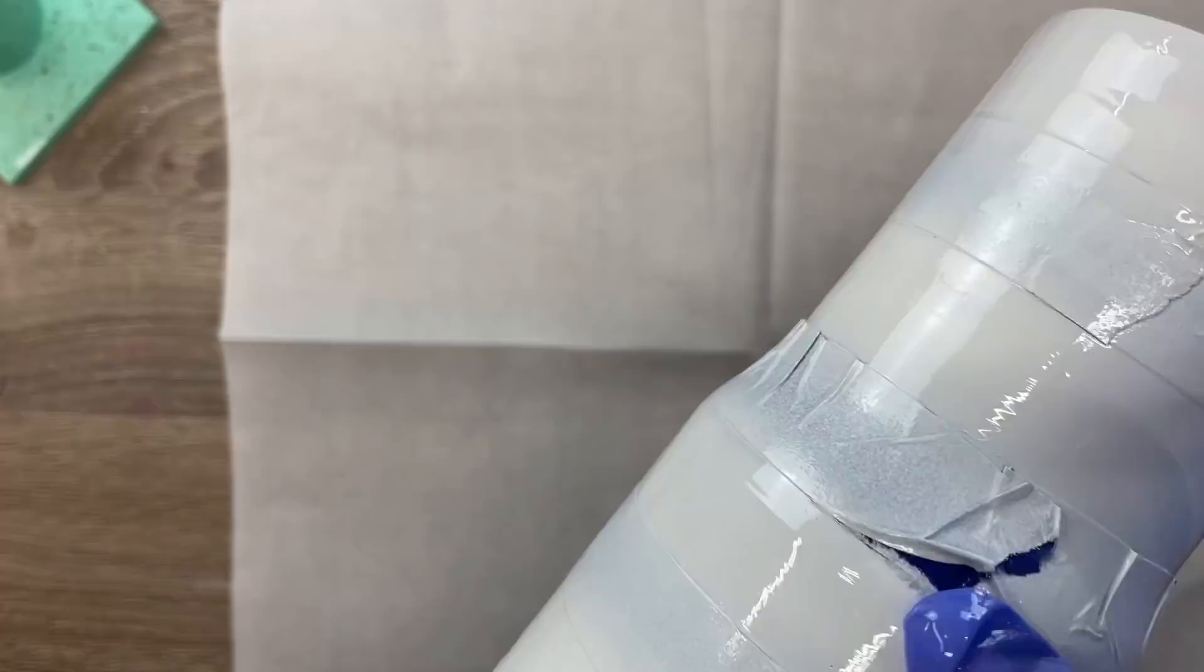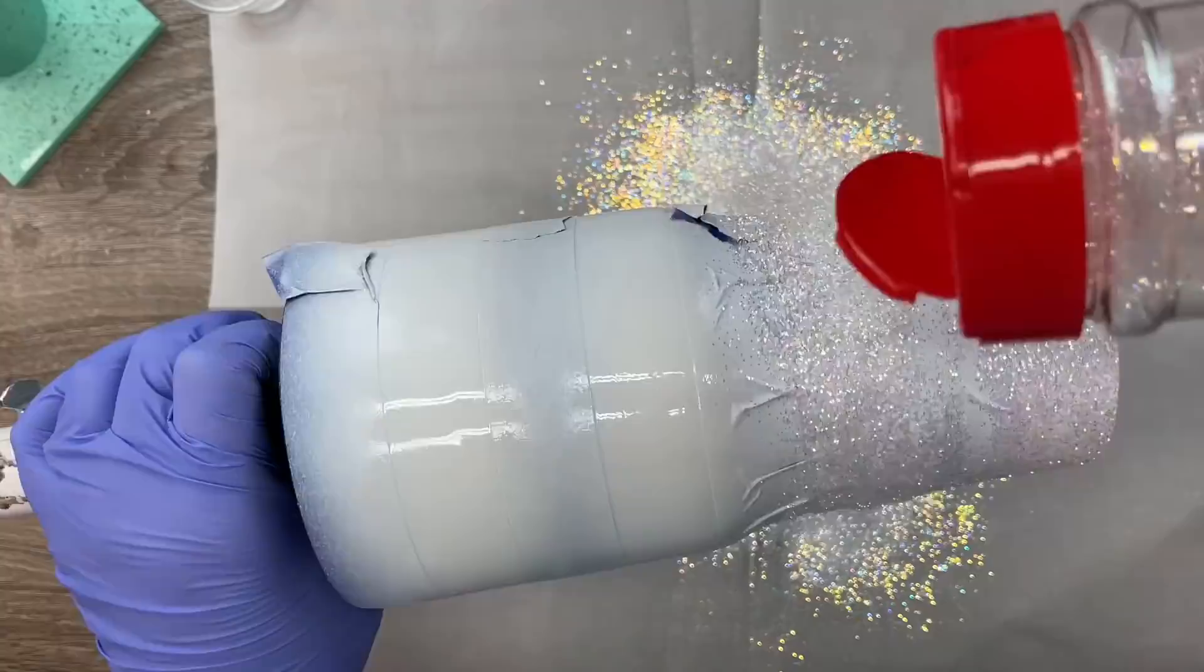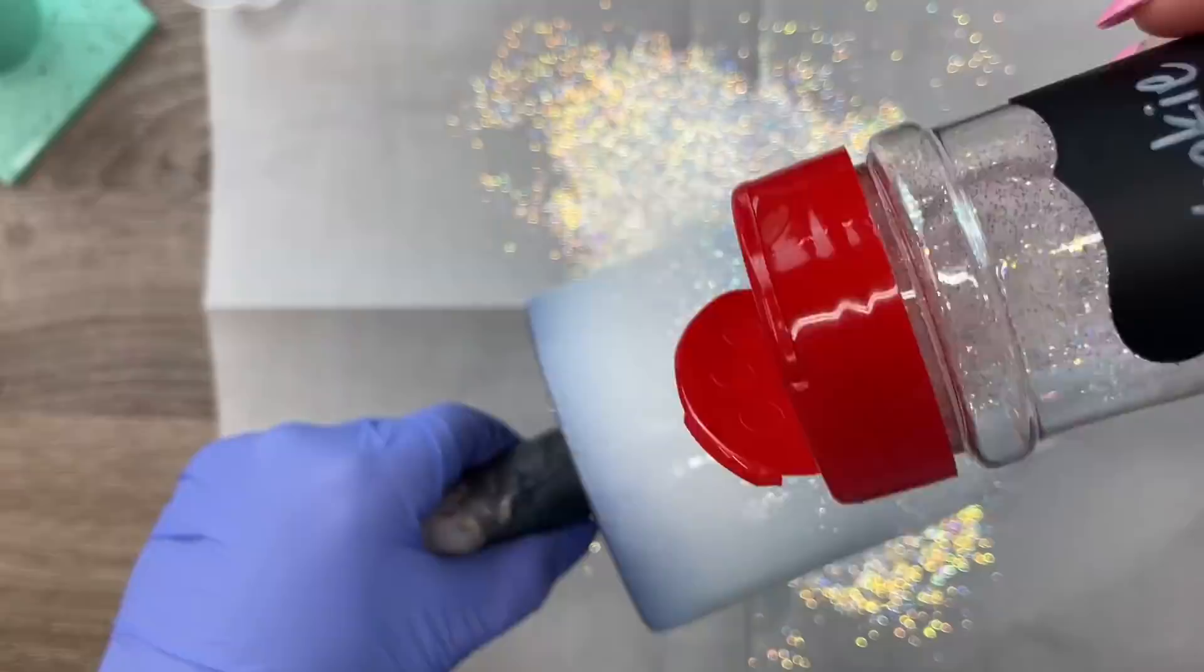Just like we would do epoxy method for any other cup, I'm going to apply it in the same way, but I am going to try and avoid those taped lines. I'm going to try and rub the epoxy in between each tape line.